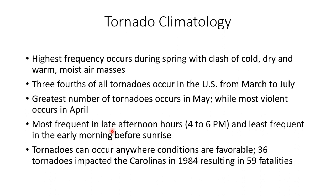Why are late afternoon hours most active? During the late afternoon, you have the greatest amount of atmospheric instability — the sun heats the Earth's surface, causing surface air to become more buoyant and want to rise. After sunset and before sunrise, the atmosphere is generally most stable.